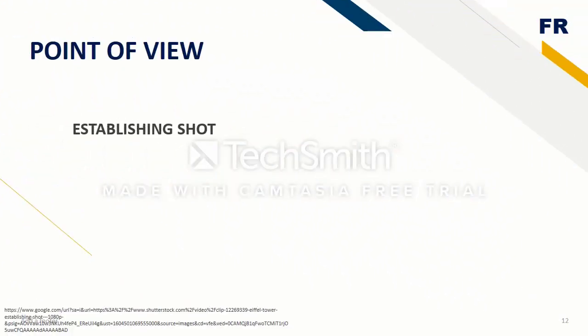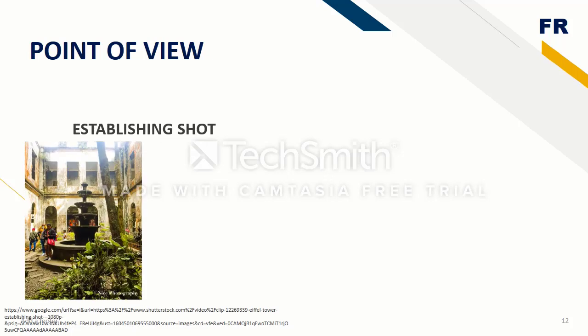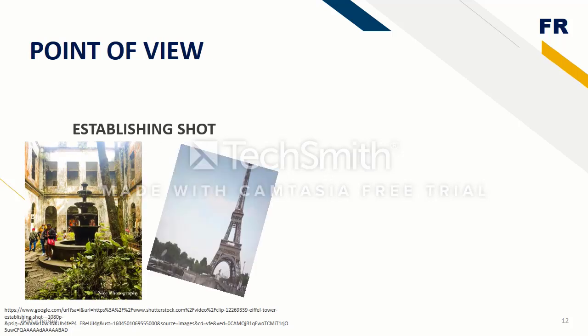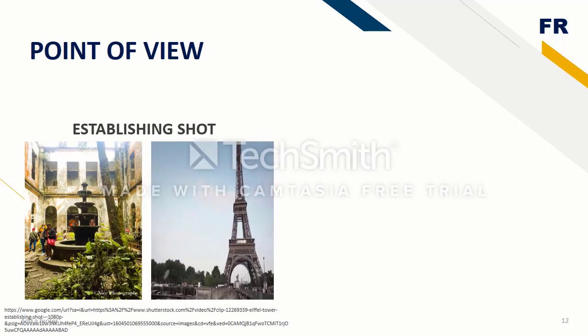Establishing shot in filmmaking and television production sets up or establishes the context for a scene by showing the relationship between its important figures and objects. It is generally a long or extreme long shot at the beginning of a scene indicating where, and sometimes when, the remainder of the scenes take place.